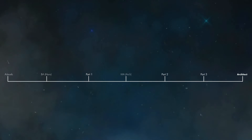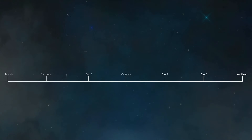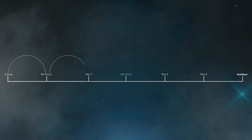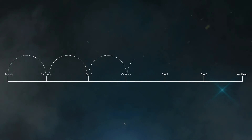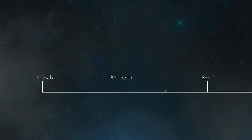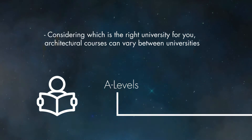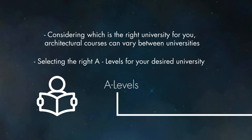As you'll see on your screen now, I have broken it down into the 7 key areas involved throughout your architectural education. And it all begins back in school or college with the A-levels you select. Depending on which A-levels you select will determine which universities you can attend and which course you can take, so you need to be very careful when considering which A-levels will help you get into that selected university to study architecture.